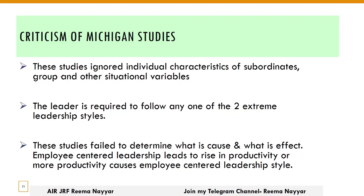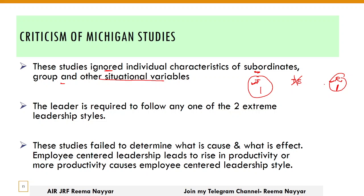Now the criticism of Michigan Studies: Did this study talk about any situational factors? No — it only focused on two leadership styles. These studies ignored individual characteristics of subordinates, group dynamics, and other situational variables. Also, the leader is required to follow any one of these two extreme styles — either task-oriented or relationship-oriented. But there are leaders whose focus is on both tasks and employees simultaneously, yet that was not addressed here.